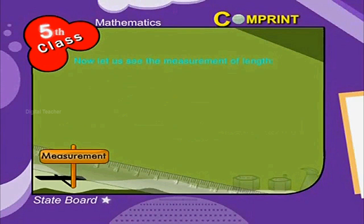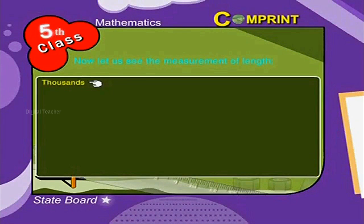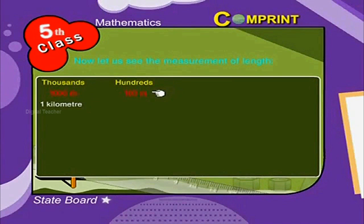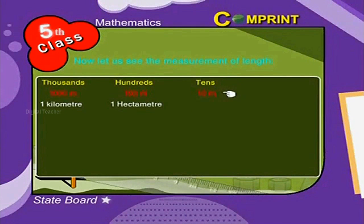Now let us see the measurement of length. One thousand meters is equal to one kilometer. One hundred meters is equal to one hectometer. Ten meters is equal to one decameter.